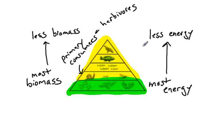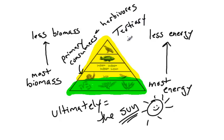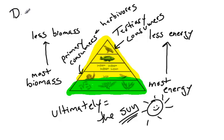We may ask you where all of the energy in the food pyramid comes from. Ultimately, energy comes from the sun. We may also ask you where the tertiary consumers are — tertiary consumers are the apex predators, the ones at the top of the food chain that nothing else eats. Finally, we may ask you what type of organism is not represented on this food pyramid, and the answer is the decomposers.